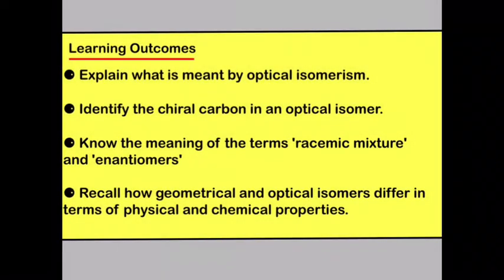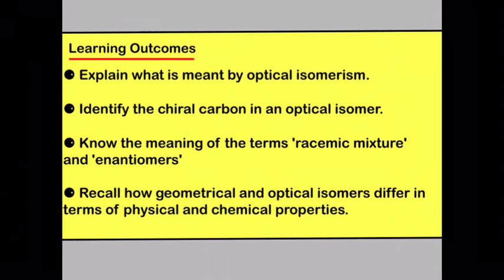So, to summarize: you should be able to explain what is meant by optical isomerism, identify the chiral carbon in an optical isomer, know the meaning of the terms racemic mixture and enantiomers, and recall how geometrical and optical isomers differ in terms of physical and chemical properties.